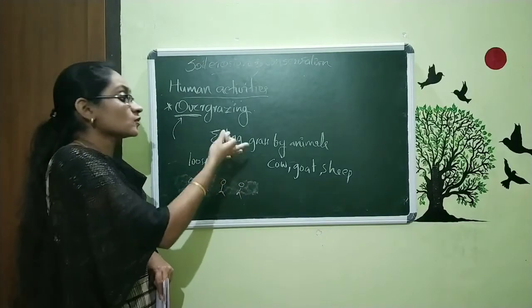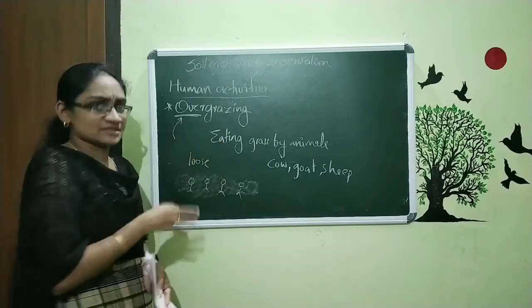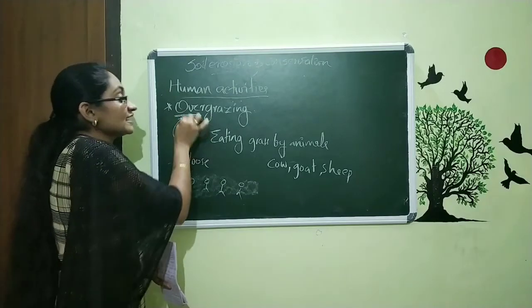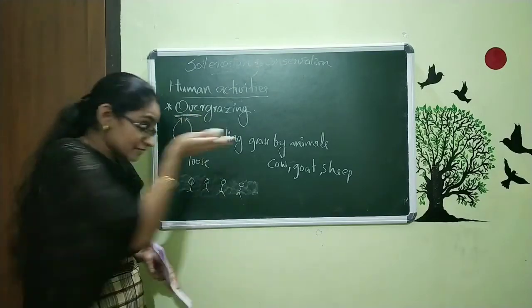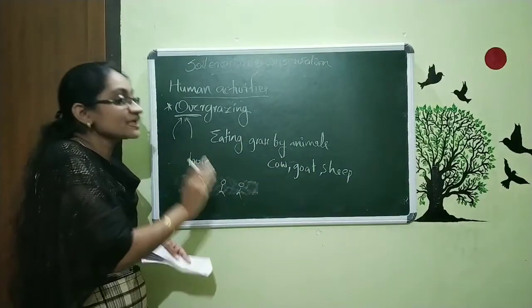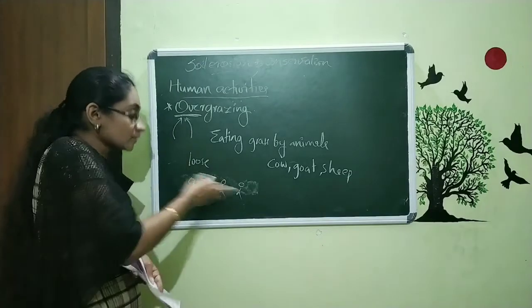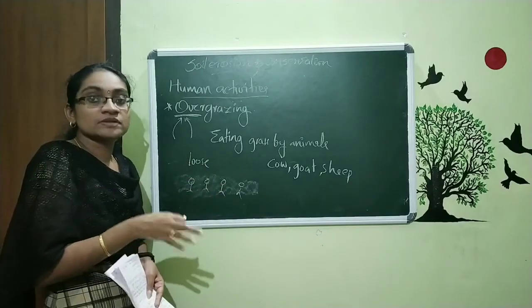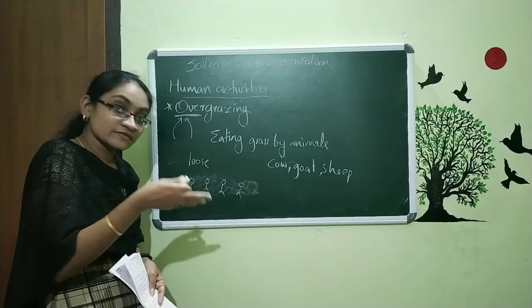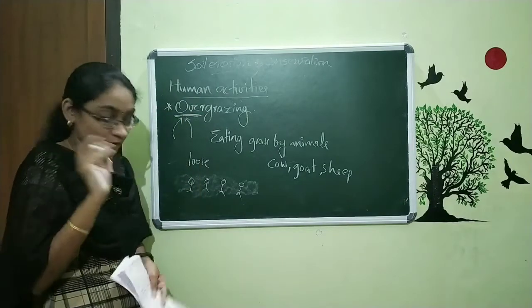Animals like cow, goat, and sheep need food — grass or plants. When we keep these animals eating within the same region again and again, there are no plants left and the soil becomes loose. So soil erosion occurs with the help of running water and wind. That is about overgrazing, the second point.